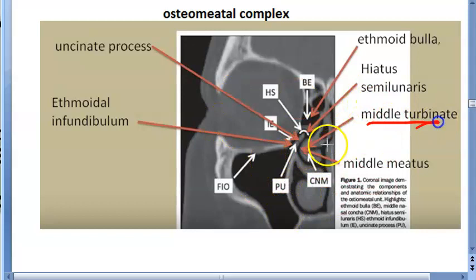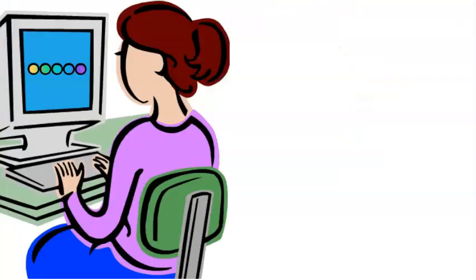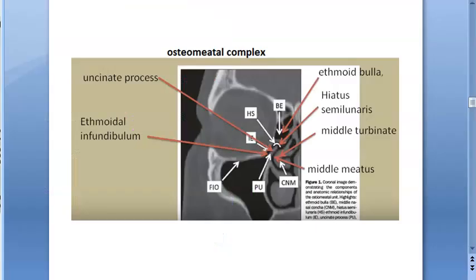One more photo here. You see the middle turbinate, the uncinate process marked here, the bulla ethmoidalis, and the agger nasi cells. For the spaces: maxillary ostium, ethmoidal infundibulum, hiatus semilunaris — curved like a semicircle — and the middle meatus shown here. So you have all four structures and four spaces visible.